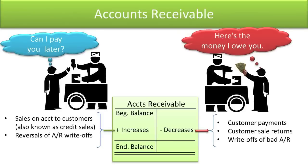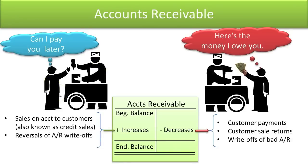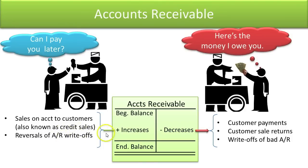Let's move on to accounts receivable. If you're selling to customers and they ask to pay later and you agree, you have an account receivable. It is an asset because it will benefit you in the future — you'll get cash when they finally pay — and you obtained control over it by making a sale, which was the past transaction. Accounts receivable increases when you make sales on account to customers (credit sales). It may also increase if you previously wrote off a receivable thinking you'd never collect, but then realized you would.